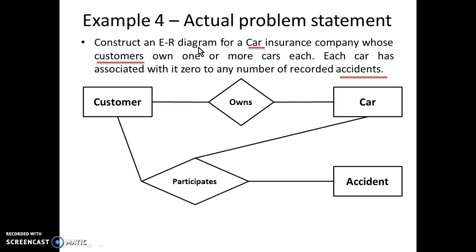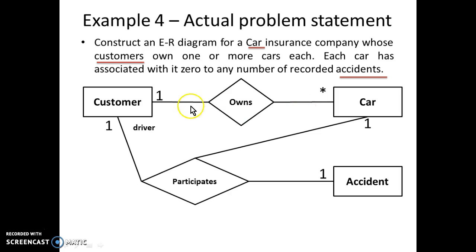The 'owns' relationship is an example of a binary relationship, whereas the 'participates' relationship is an example of a ternary relationship. For cardinality: the customer participates as a driver in the accident, one customer can own many cars, and a car cannot belong to more than one customer in the company records. So one customer owns many cars, and when an accident occurs, one driver is driving one car.